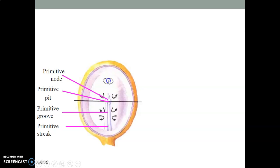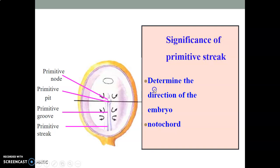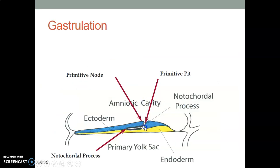From the primitive node is where we form our notochord. The significance of the primitive streak is: it helps to form the notochord, and it determines the direction of the embryo. The notochord process grows cranially from the primitive pit toward the prechordal plate.